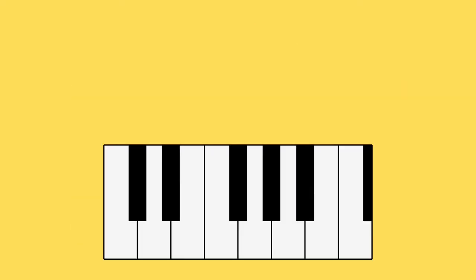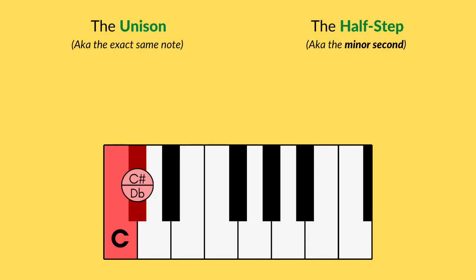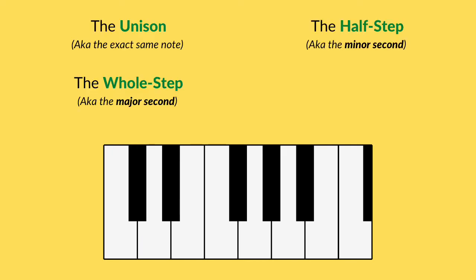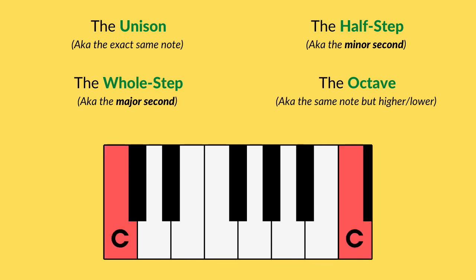We'll cover all of those more in depth later, but for now you want to remember these four: the unison, the half step, the whole step, and the octave. In the next lessons we'll be going over chords and scales, and we'll be using these terms, so make sure you have them down by then.